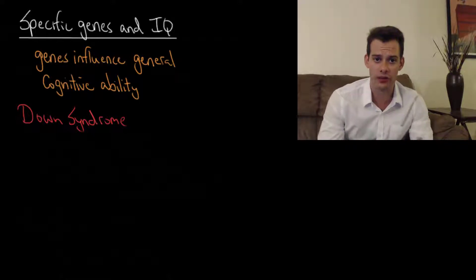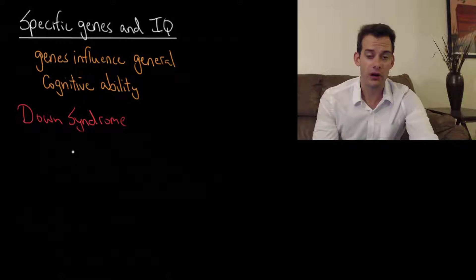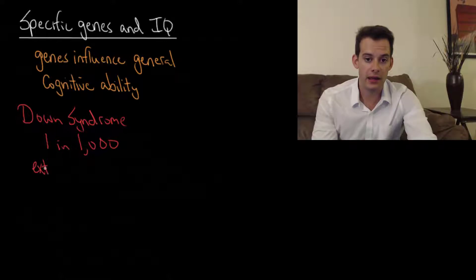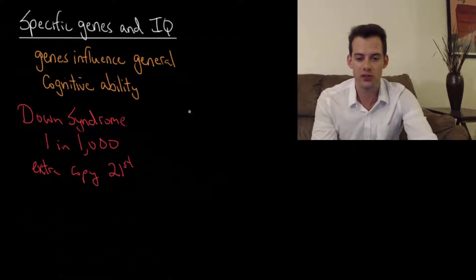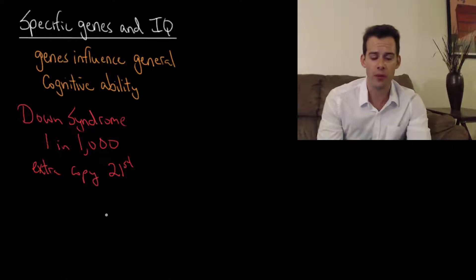So we'll start by looking at Down syndrome. Down syndrome occurs in about one in a thousand births and it involves an extra copy of the 21st chromosome. So this is called trisomy, so the person has three of the 21st chromosome rather than the usual pair that most people would have.